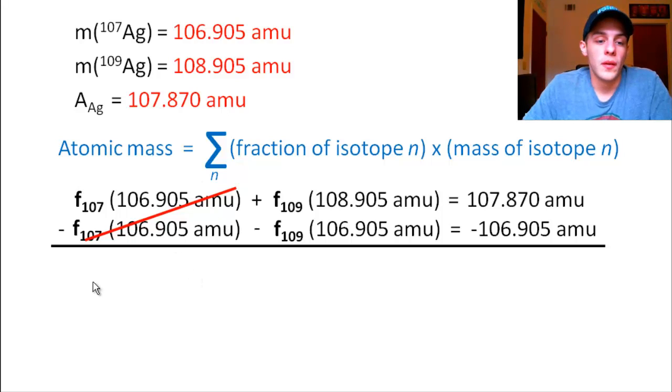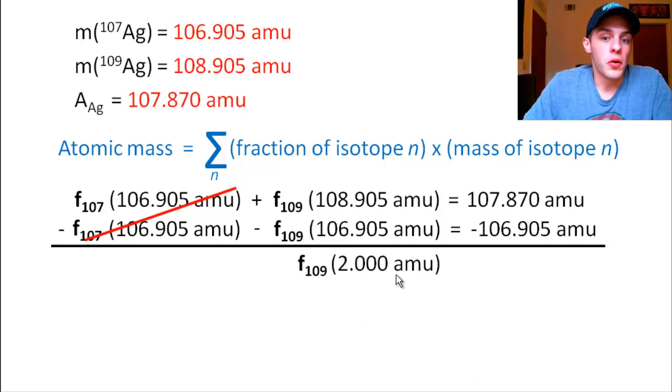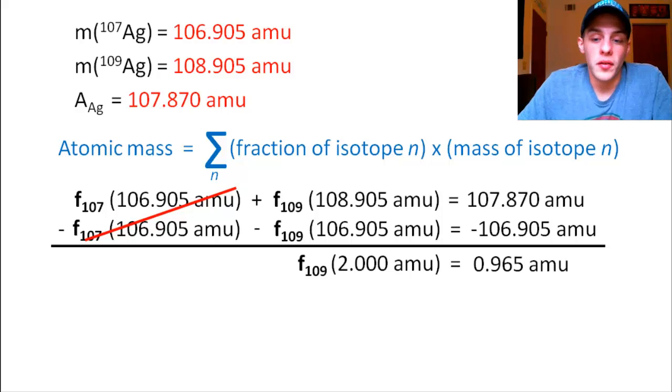So we're adding the two equations. This variable cancels out. We're left with one variable and one constant. So if we add the left-hand side of the equation together, we will get f₁₀₉ times 2.000 amu. And then we add the right-hand side of the equation together. That's going to give us 0.965 amu.